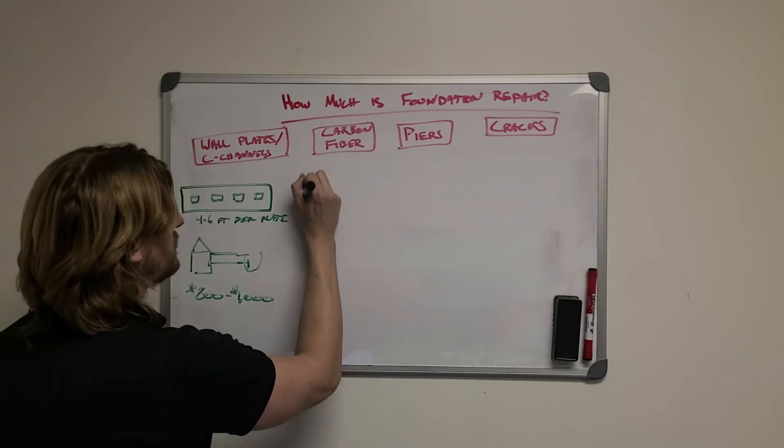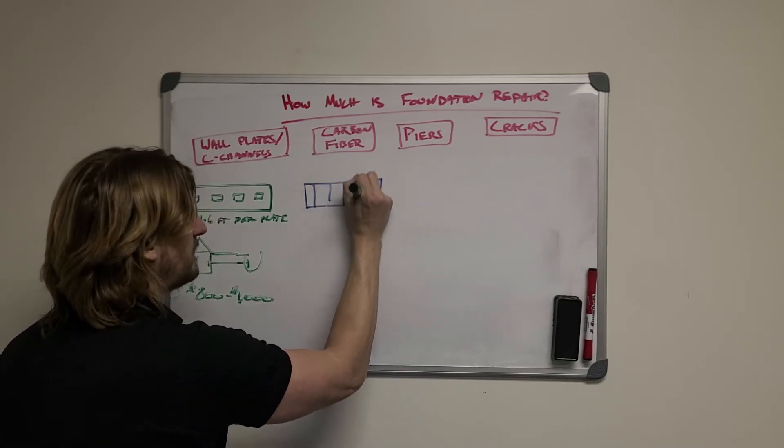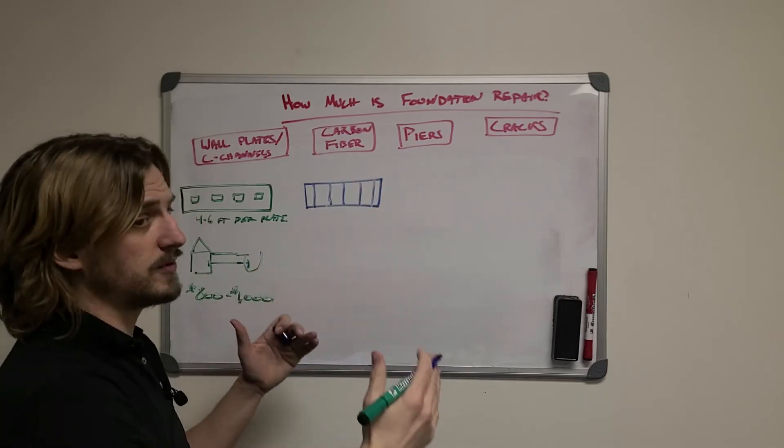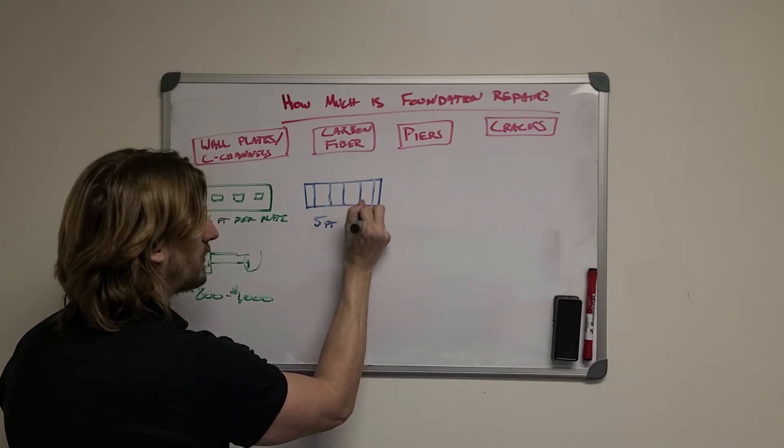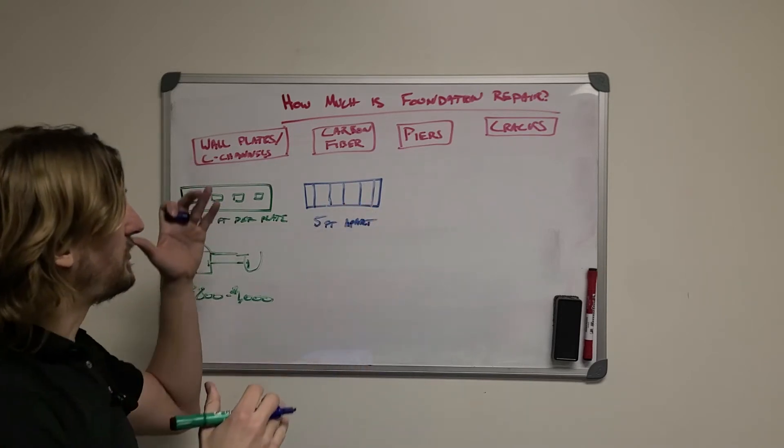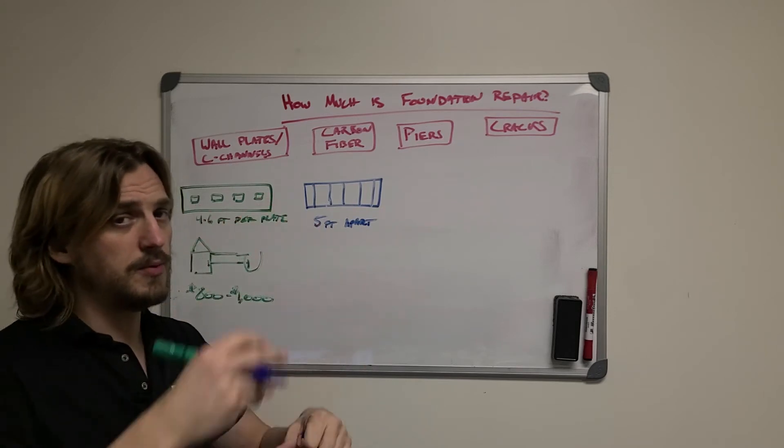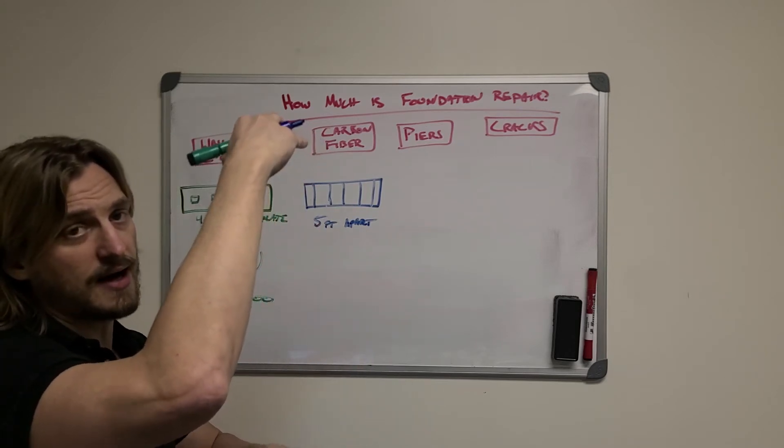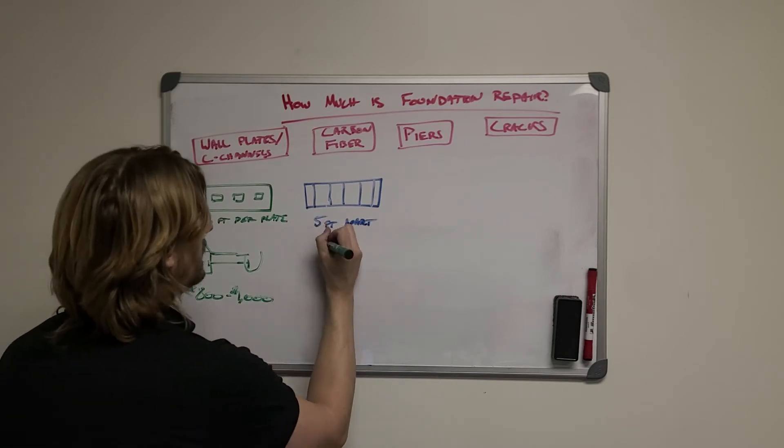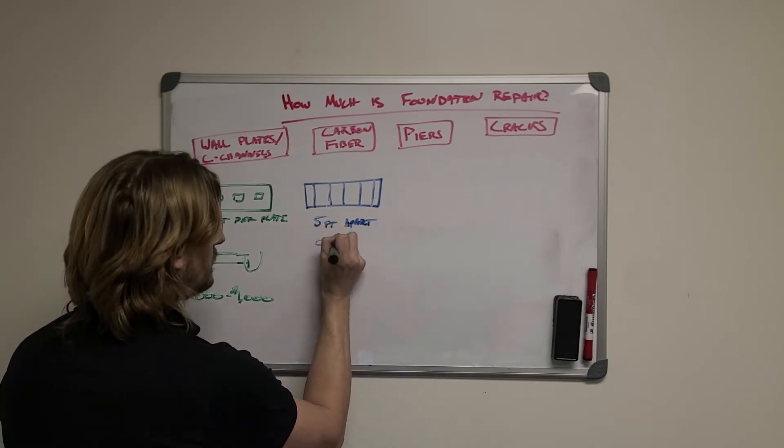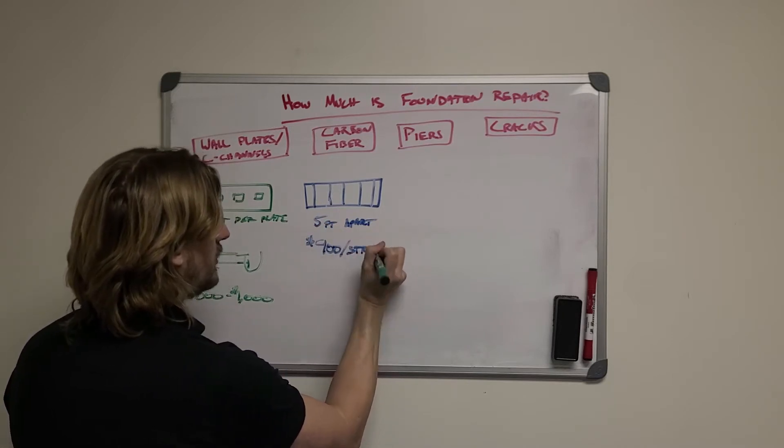Carbon fiber is done in much the same way where we have a wall and we have the carbon fiber here. We do four feet from the corners and we do them five feet apart. With the carbon fiber it's the same kind of thing, we price it per foot but we come up with a price by the height of the wall so we can make it easy. You're looking about $900 per strap to install this.